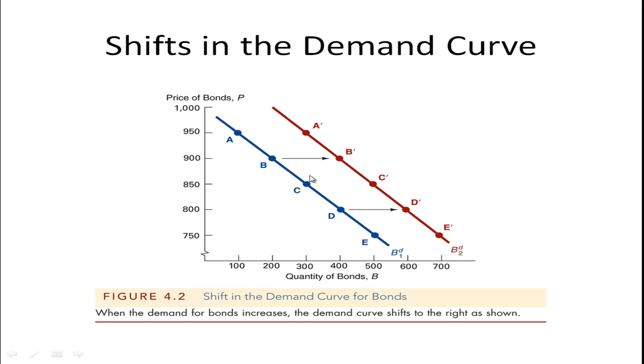These factors, many of these factors like increasing wealth, will cause the demand curve to shift out to the right. Reduction in risk, increase in wealth, those will shift the curve out and to the right like this. So at the same price or same interest rate, there will be a higher demand for bonds.